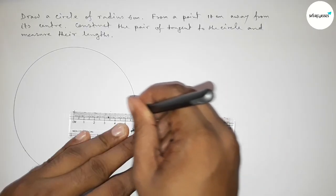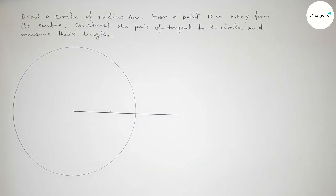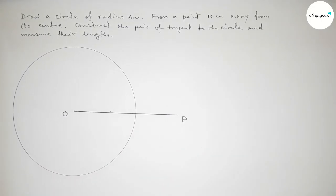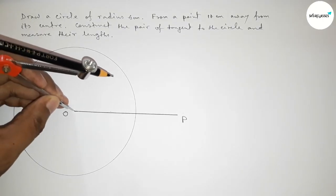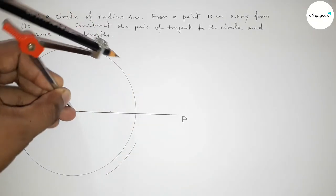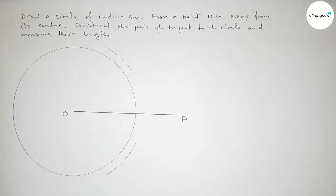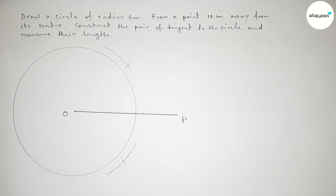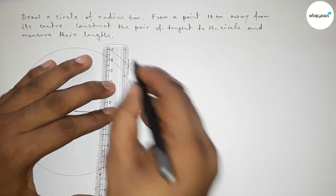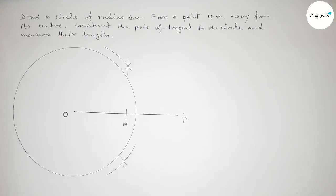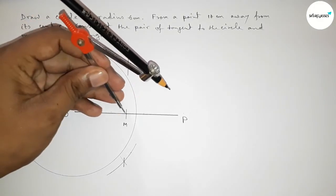Now taking a 10 centimeter length from the center — this is 10 centimeters. Taking center O and point P. Now we have to bisect the line OP. Taking greater than half of OP and drawing an arc, then with the same length putting the compass on the other side and cutting arcs on both sides.